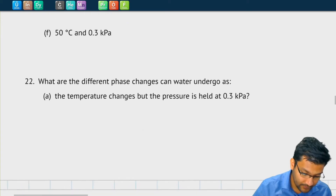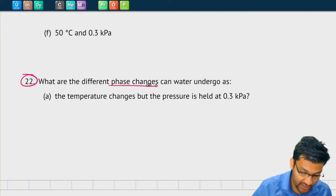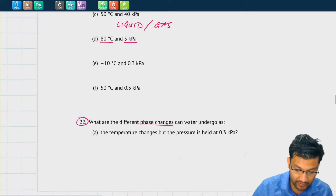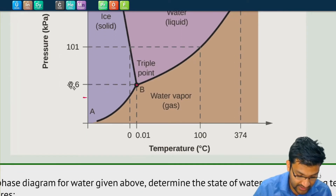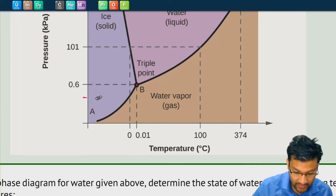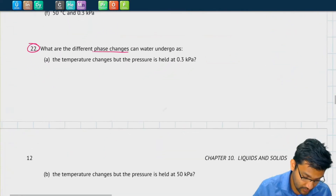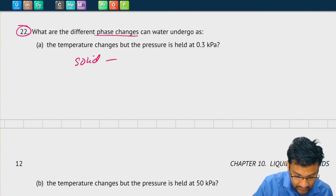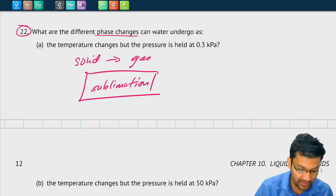Let's look at number 22. It asks: what are the different phase changes that can happen to water as it undergoes a temperature change, but the pressure is held constant at 0.3 kilopascals? Since 0.3 kilopascals is below the triple point at 0.6 kilopascals, as temperature increases we go directly from a solid to a gas, so the only phase change that can happen is sublimation.